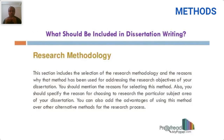This section includes the selection of research methodology and the reasons for why it has been selected. You should mention the reasons for selecting the method and specify the reason for choosing to research that particular subject area of your dissertation. You can also add advantages of using one method over another — you can compare a couple of methods, but you need to have data for comparison and you have to say which method is superior to others.